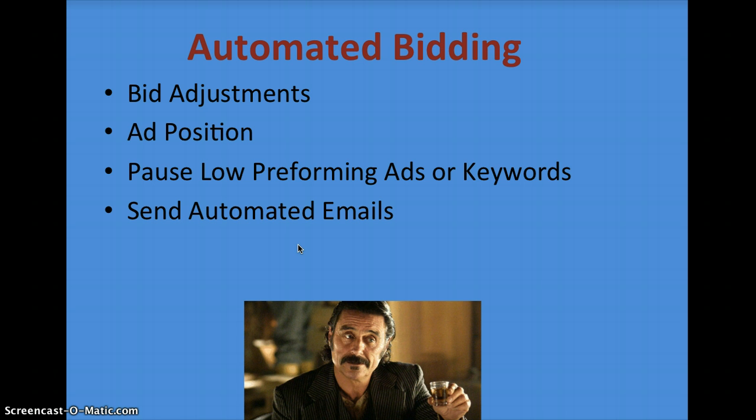Then there's automated bidding rules. You can do this based on ad position — targeting certain positions or making bid adjustments based on CPA. You can pause low performing ads or keywords and you can send automated emails. It's all stuff that you can do within AdWords automated bidding.